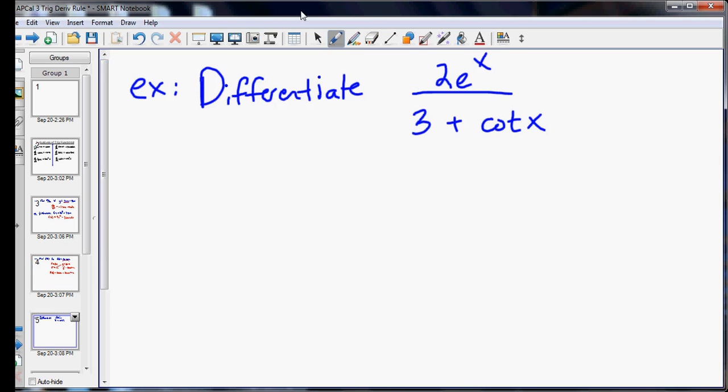Here's our last example. This one will require the quotient rule, because we are dividing two things that have variables with them. And we're also combining two different kinds of functions. We have an exponential, 2e^x on top, and trig on the bottom, with the cotangent being involved.